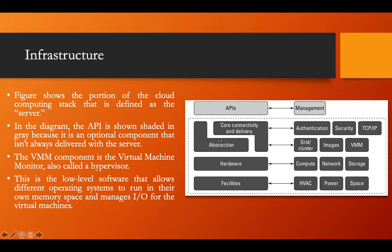The concept of abstraction is present, along with core connectivity and delivery components. First we have authentication and security, then communication protocols like TCP/IP. Within the core connectivity and delivery layer, we have grid or cluster computing, then images created by virtualization software, and then the Virtual Machine Monitor component, which has the ability to manage all virtual machines. The hardware includes memory, CPU, and networking.